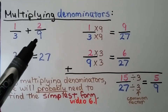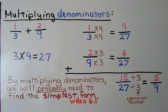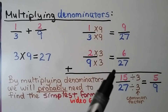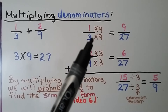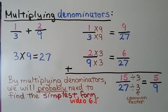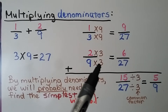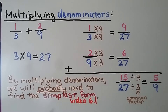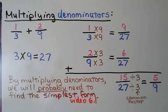To add 1 third plus 2 ninths by multiplying denominators for the common denominator, we do 3 times 9, which equals 27. We can use 27 as their common denominator. 3 times 9 is 27, so we multiply the numerator 1 times 9 to get 9 twenty-sevenths. 9 times 3 equals 27, so we multiply its numerator times 3 and get 6. Now we're adding 9 twenty-sevenths plus 6 twenty-sevenths, which equals 15 twenty-sevenths. We need to write it in simplest form, because when multiplying denominators we will probably need to simplify.